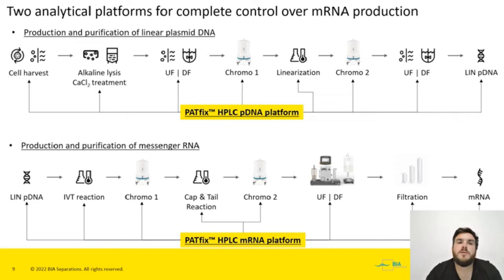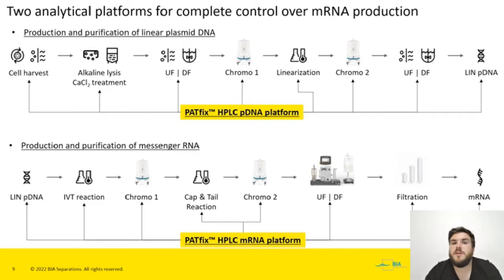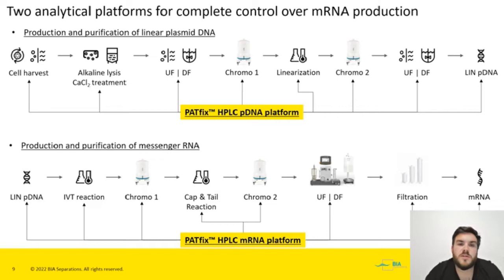Our two analytical platforms were designed and developed for complete control over mRNA production. The process is generally divided into two major steps: first, production and purification of linear plasmid DNA; and second, production and purification of messenger RNA from linear plasmid DNA. It's very important that all these steps are controlled, and our platforms can play a crucial role — with them, we can control every step of plasmid and mRNA production.